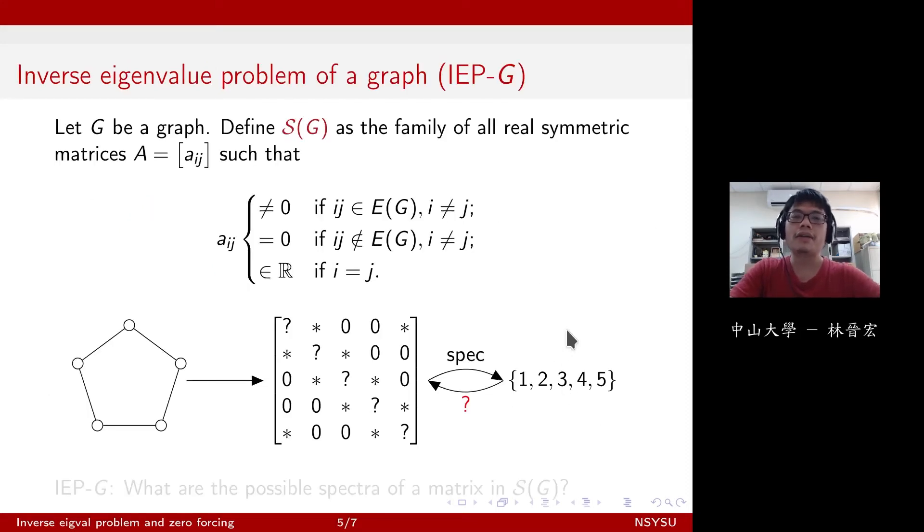On the other hand, the inverse eigenvalue problem of a graph is a topic that describes or studies the set S of G. As described before, S of G contains all the weighted adjacency matrices of the graph G. So when G is C5, this is all the matrices. It looks like this. So when you give me a matrix like this, then I can calculate the spectrum.